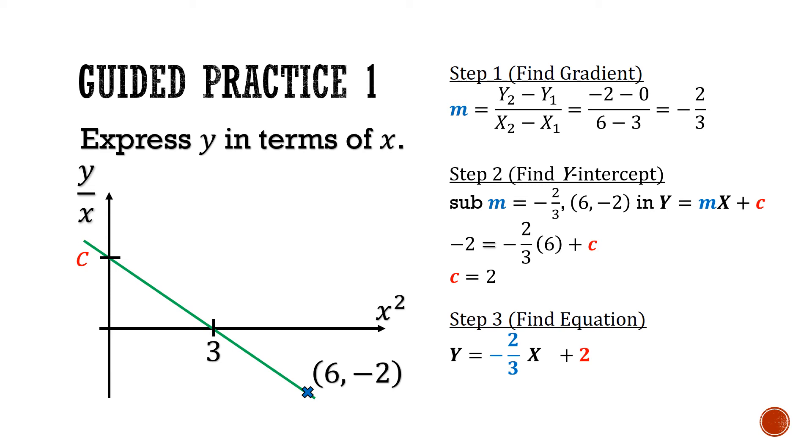Next, we'll substitute away the big Y and the big X. So big Y is y over x, and big X is x squared. Now, to make y the subject, we can just multiply x throughout. This will give us y equals negative 2 thirds x cubed, plus 2x.